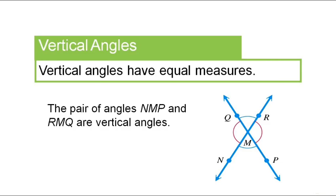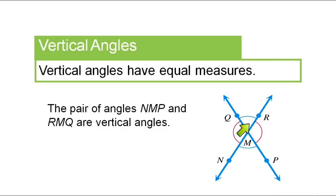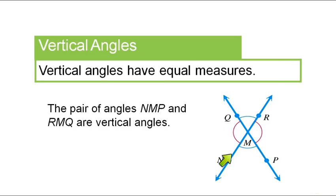You may remember this from high school geometry. Vertical angles have equal measures, and in this diagram, you take any two lines that cross each other, you're going to get two sets of vertical angles. Angles NMP and QMR are equal, but there's another set of equal angles. Angle QMN is also equal to angle RMP, so these two in red are also equal to each other.